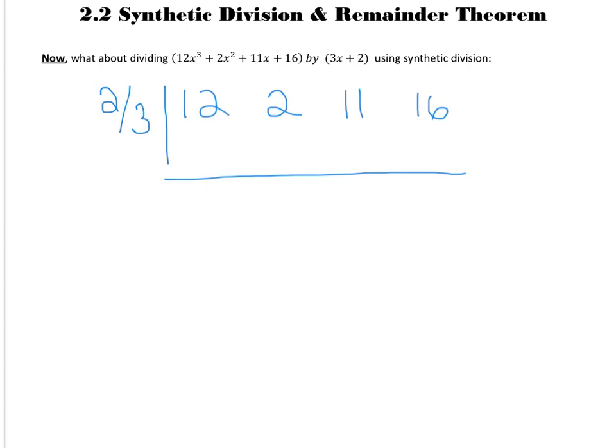So just like we did yesterday, we're now going to bring down our 12, and now we are going to multiply 12 times 2 thirds, and thankfully for us, 12 times 2 thirds gives us a nice number, is 8.